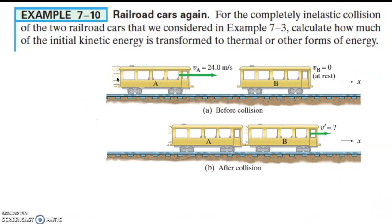Railroad cars, again, for a completely inelastic collision of the two railroad cars that we considered, calculate how much of the initial kinetic energy is transformed to thermal or other forms of energy. So here's what we got. We got this one moving 24, this one at rest. They collide and they end up with the final velocity.